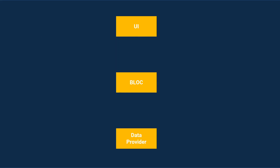The BLoC pattern has three different components: the first is UI, then BLoC, and the data provider. The UI can interact with BLoC and vice versa, and the BLoC component can interact with the data provider and vice versa. The UI contains all the UI of your application. BLoC is the Business Logic Component and contains all the business logic. The data provider can be considered as your database or backend.